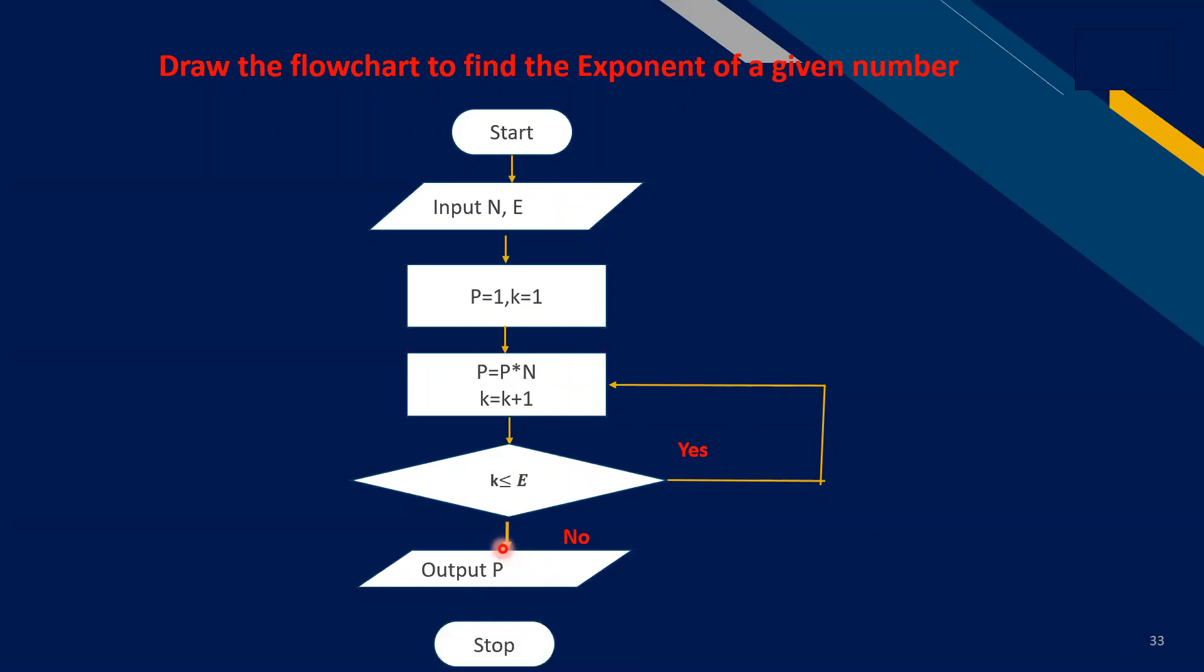Suppose the number n is 5 and 5 multiply by p, and 5 multiply by 1 equals 5. So check if the value is less than. If yes, k is less than, then the loop will be continued and increment will be there. K equals k plus 1.